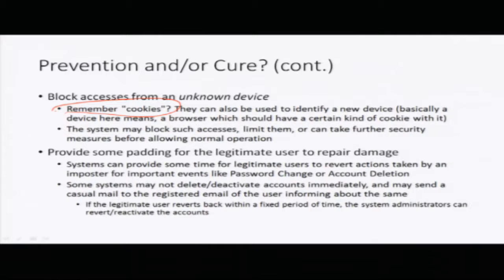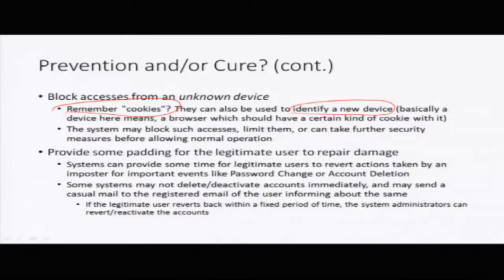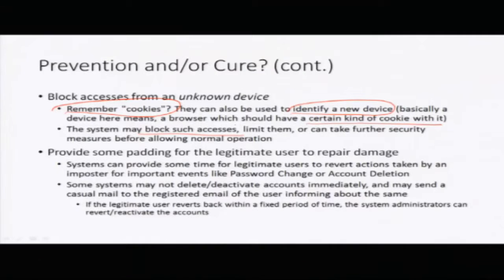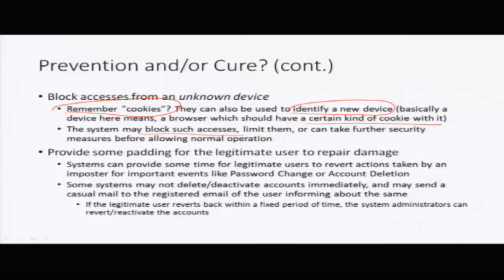Cookies can also be used to identify a new device. Suppose you bought a new laptop and logged into Facebook from it — Facebook might actually block your access because that device is not identifiable, meaning it does not have the expected cookie. When the browser connects to Facebook and is not able to send that information, Facebook may consider it suspicious. The system may block such accesses or ask you to identify yourself by entering a one-time password or tagging some friends before proceeding.